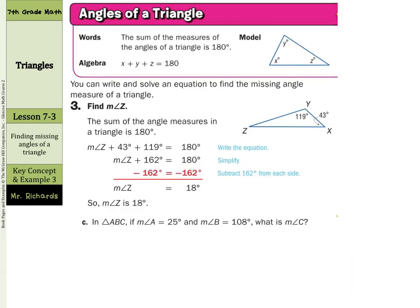Now we can also find missing angles of triangle. The sum of the measures of the angles of a triangle is 180 degrees. And algebra x plus y plus z equals 180 degrees. So you can write and solve an equation to find the missing angle measure of a triangle. Here if we're looking for the measure of angle z. We know that y is 119 and x is 43 degrees. So z plus the 43 plus the 119 are going to add up to 180. Well 43 plus 119 is 162 and you subtract the 162 from both sides to get the measure of angle z is 18.